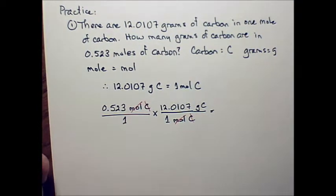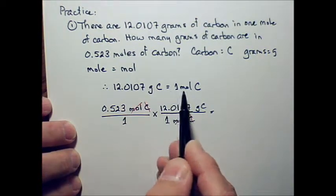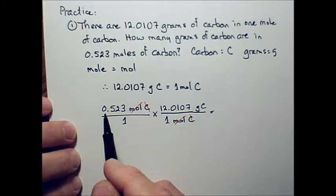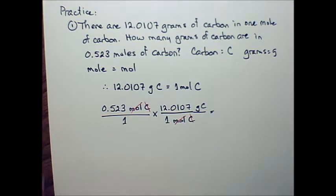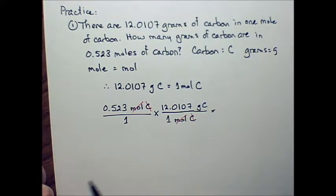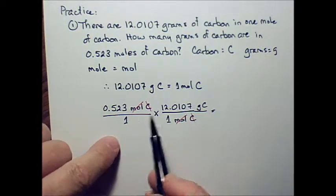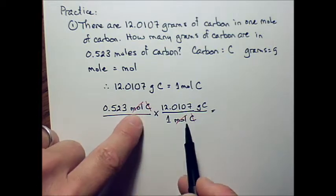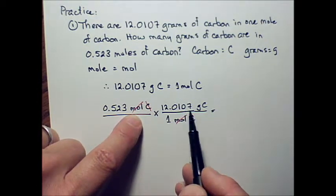All right, so we interpret the problem, find the two things that are equal and write an equality statement, find the amount in the problem that's given to you, an actual amount that's given, not an equality statement, and that's that 0.523 moles of C. Put that over one, build the equality statement so we can cancel out the units, and then you do the math.